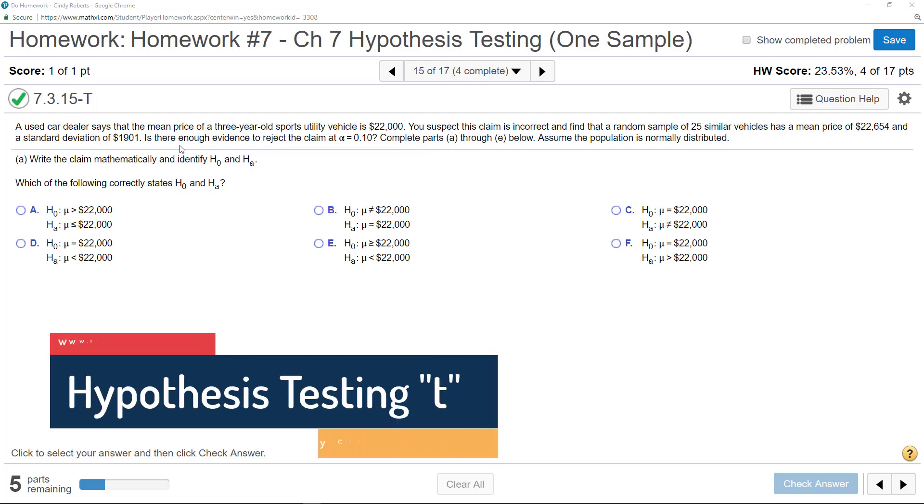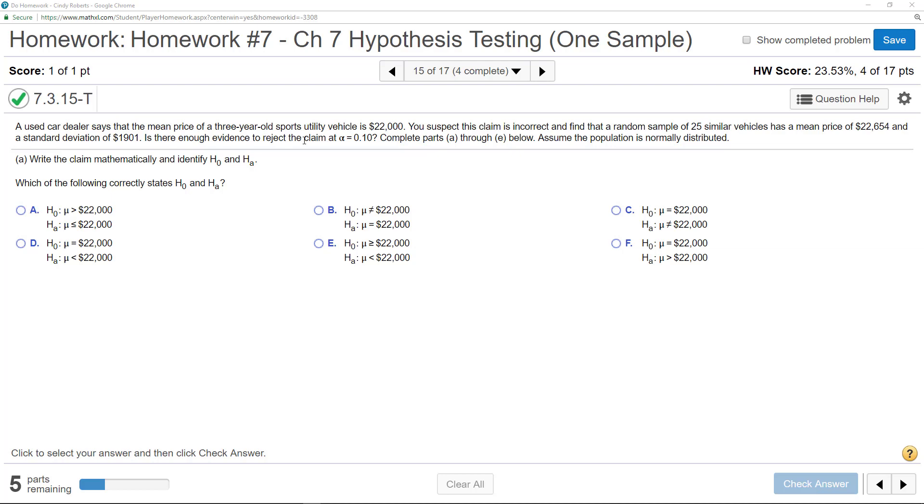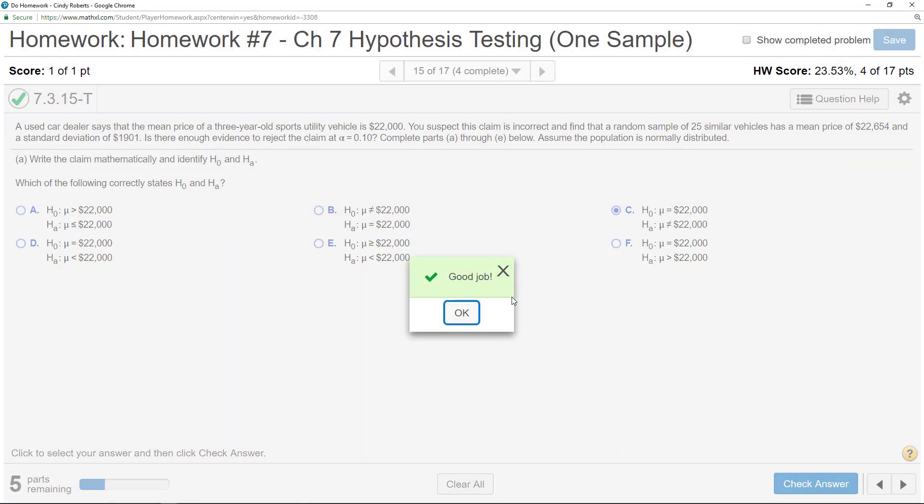We have a used car dealer that says the mean price of a three-year-old sport utility vehicle equals $22,000, and you think that this is incorrect. It doesn't say anything about greater or less than, so we just want to see is there a difference?